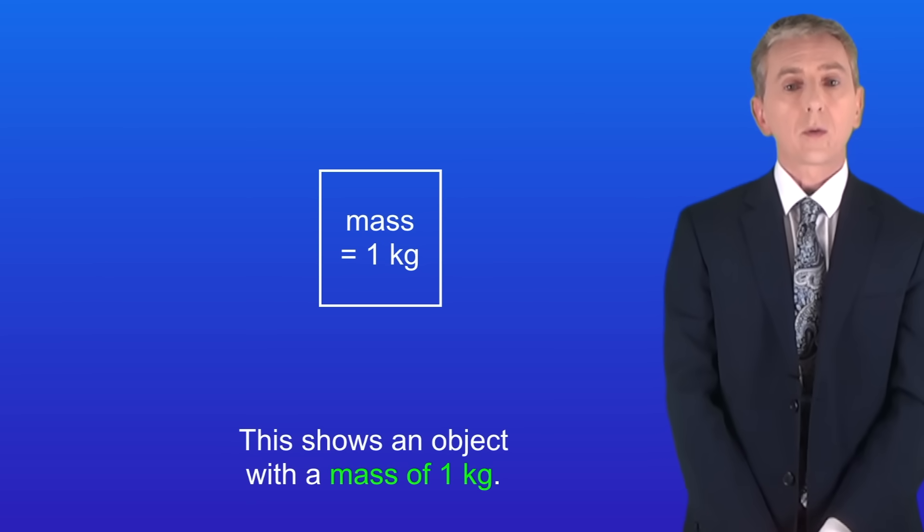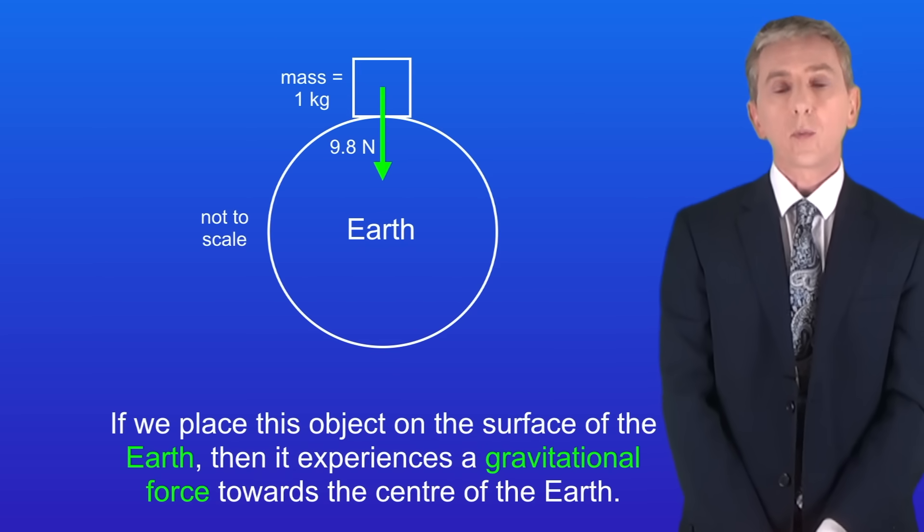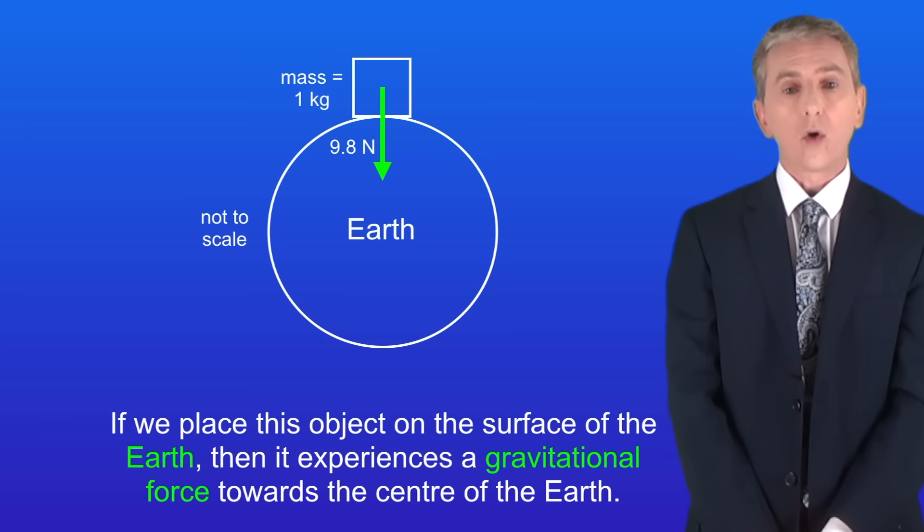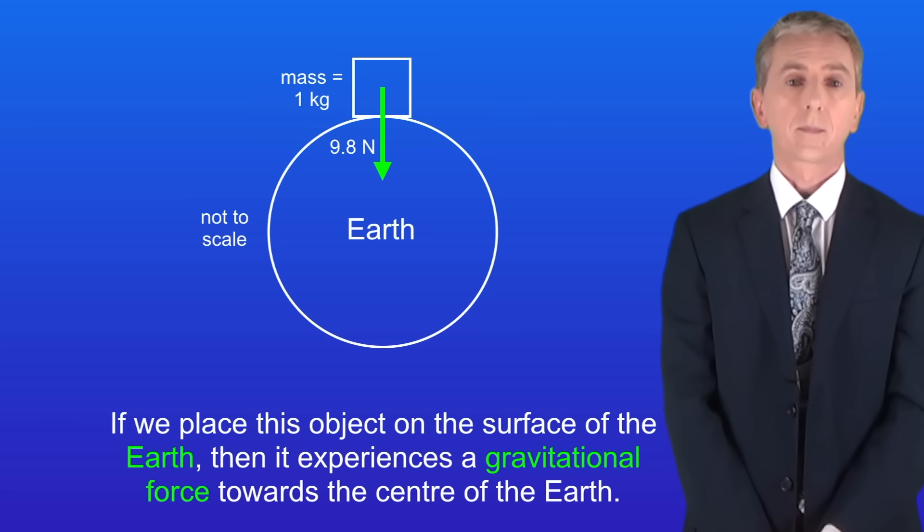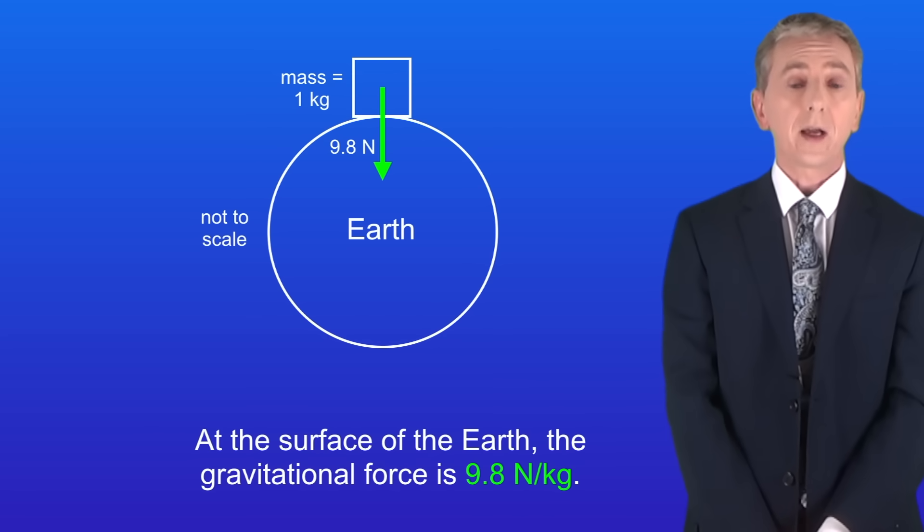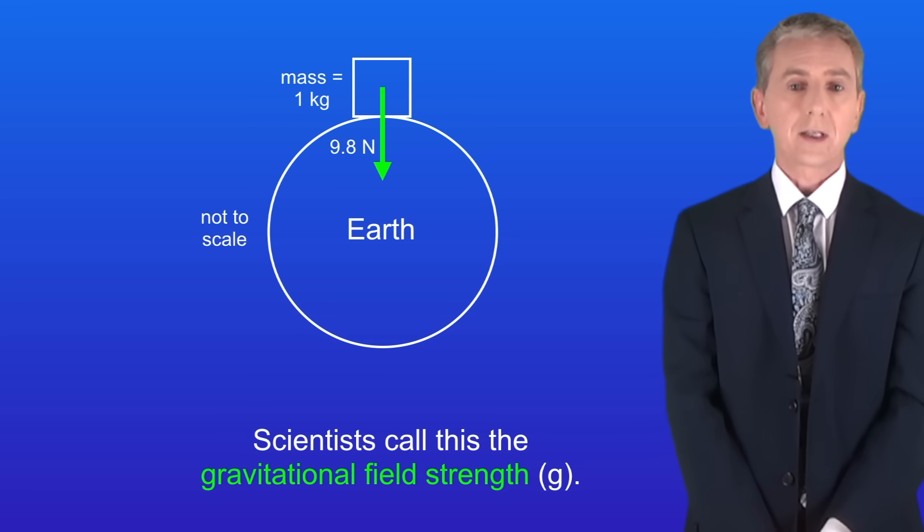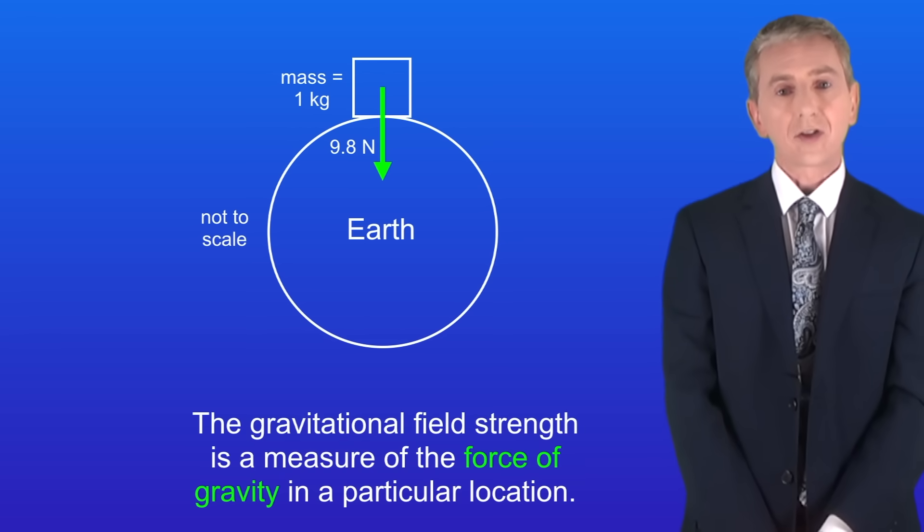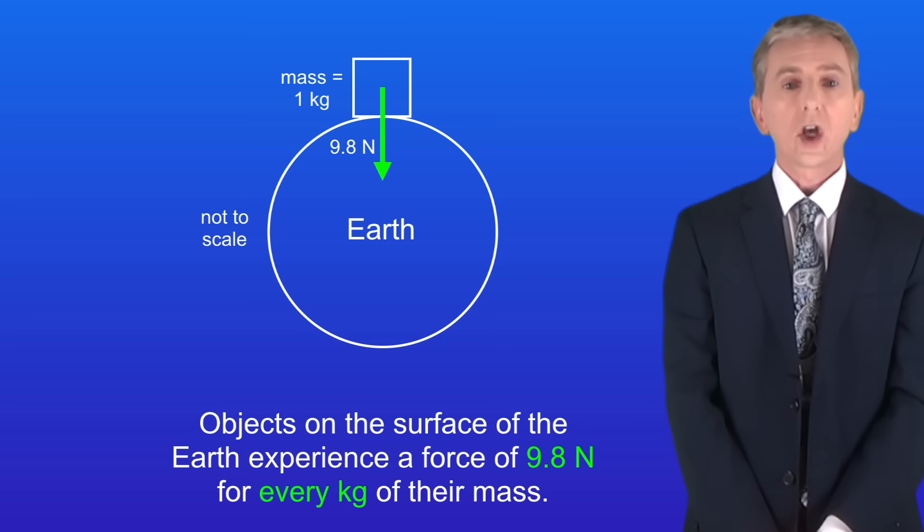I'm showing you here an object with a mass of one kilogram. If we place this object on the surface of the earth then it experiences a gravitational force towards the centre of the earth. At the surface of the earth the gravitational force is 9.8 newtons per kilogram. Scientists call this the gravitational field strength and this has the symbol lowercase g. The gravitational field strength is a measure of the force of gravity in a particular location. Objects on the surface of the earth experience a force of 9.8 newtons for every kilogram of their mass.